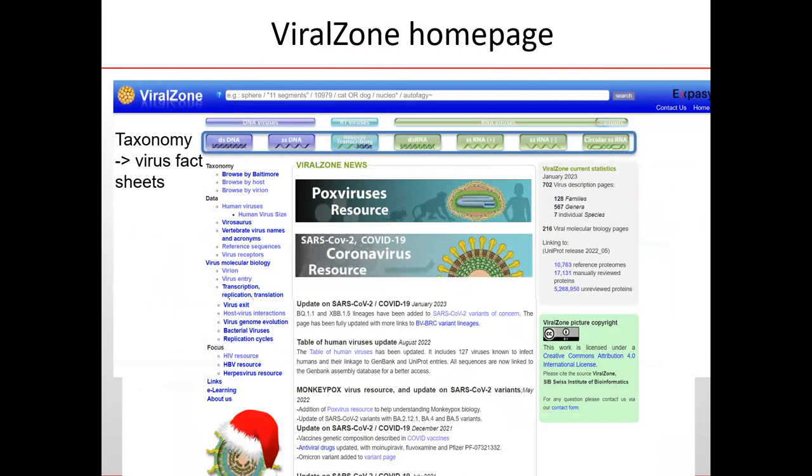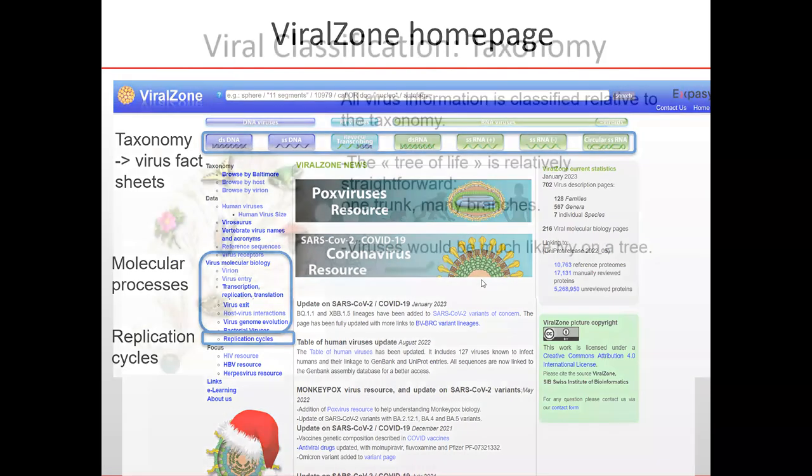The ViralZone homepage is like this: you have a taxonomy access, which is a Baltimore classification—the kind of nucleic acid present in the virion. You have some molecular processes, you have replication cycles, and a few other data in there.